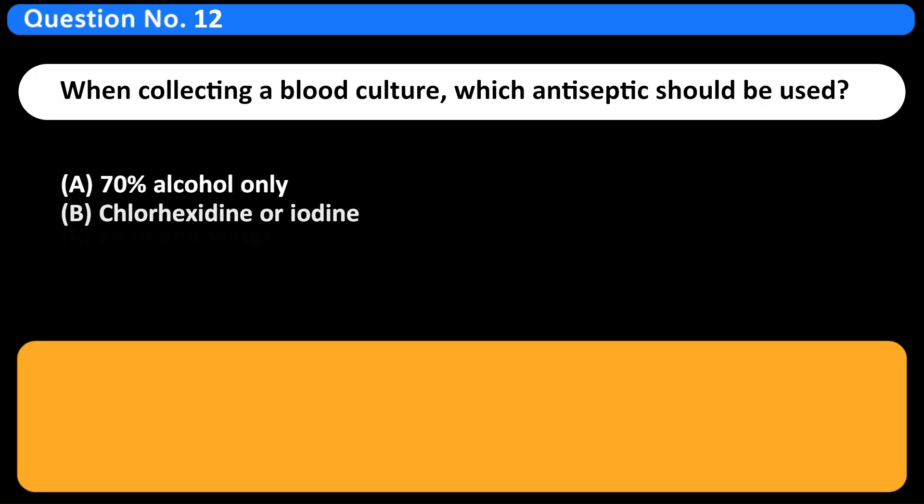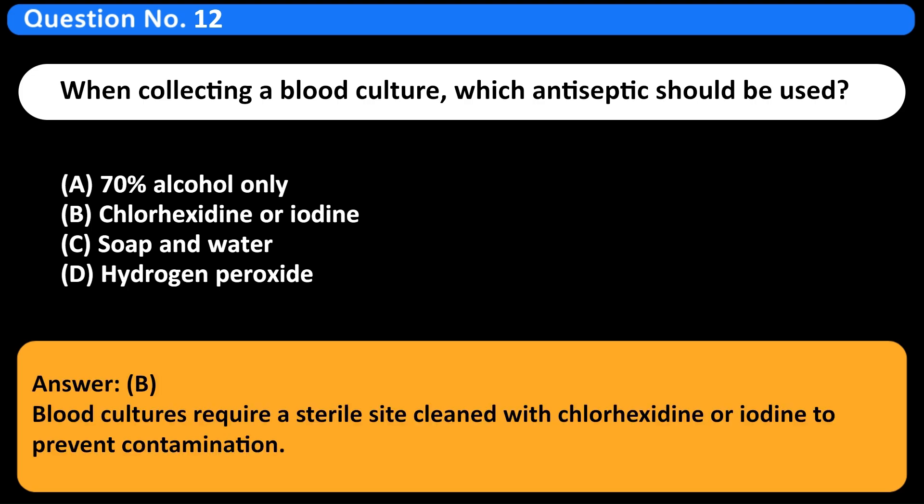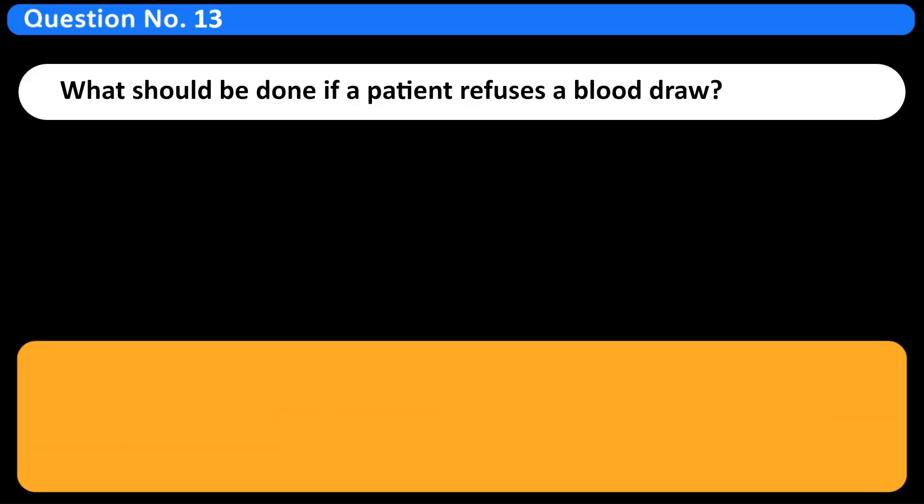When collecting a blood culture, which antiseptic should be used? A. 70% alcohol only. B. Chlorhexidine or iodine. C. Soap and water. D. Hydrogen peroxide. Answer B. Blood cultures require a sterile site cleaned with chlorhexidine or iodine to prevent contamination.